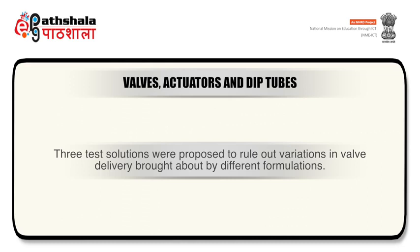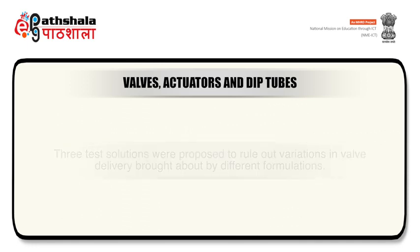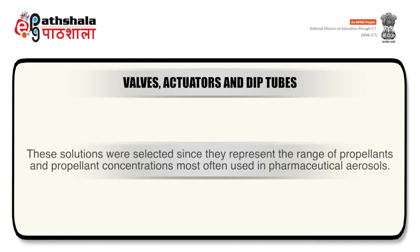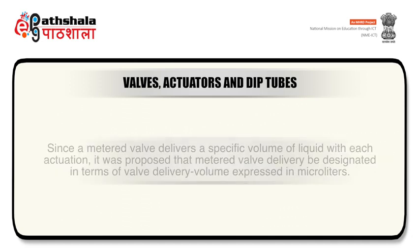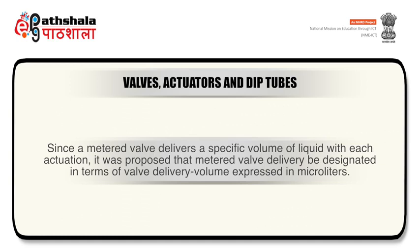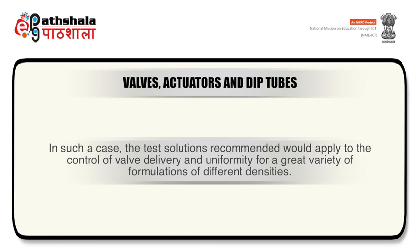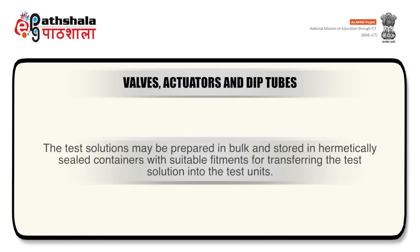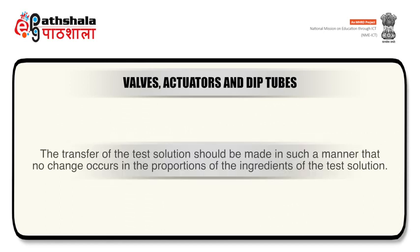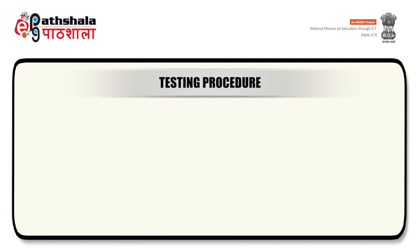Three test solutions were proposed to rule out variations in valve delivery brought about by different formulations. The test solutions represent the range of propellants and propellant concentrations most often used in pharmaceutical aerosols. Since a metered valve delivers a specific volume of liquid with each actuation, it was proposed that metered valve delivery should be designated in terms of valve delivery, which is the volume expressed in microliters. The test solutions recommended would apply to the control of valve delivery and uniformity for a great variety of formulations of different densities. The test solutions may be prepared in bulk and stored in hermetically sealed containers with suitable fitments for transferring the test solution into test units, in such a manner that no change occurs in the proportions of the ingredients.